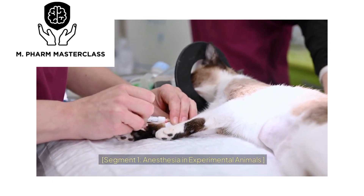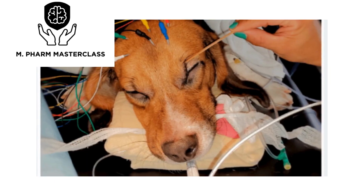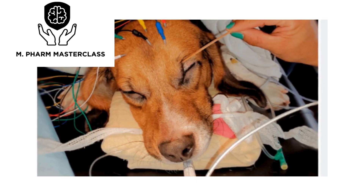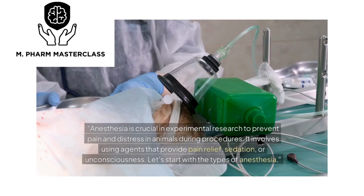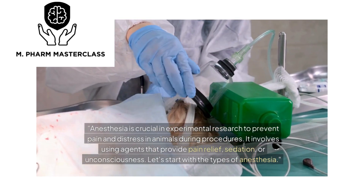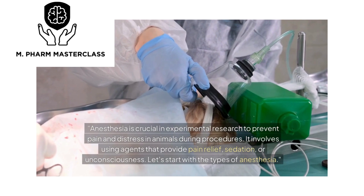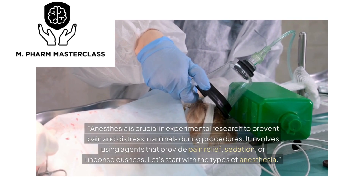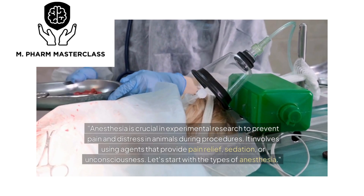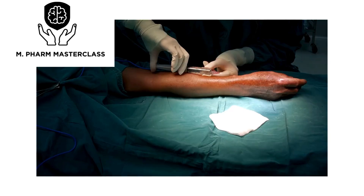Anesthesia in Experimental Animals. Anesthesia is crucial in experimental research to prevent pain and distress in animals during procedures. It involves using agents that provide pain relief, sedation, or unconsciousness. Let's start with the types of anesthesia.